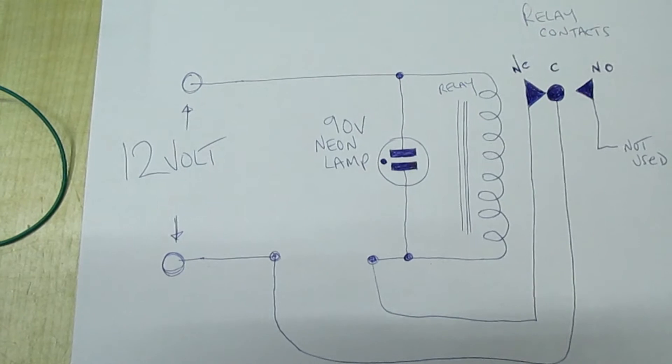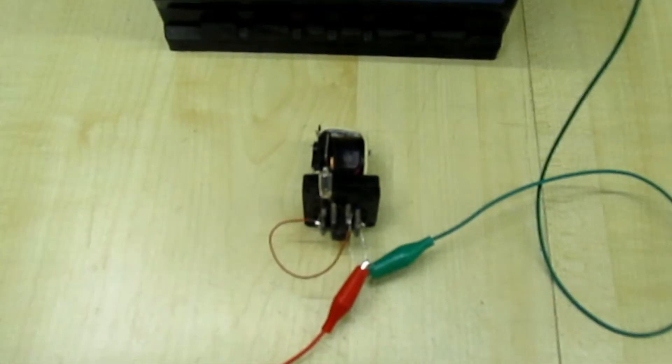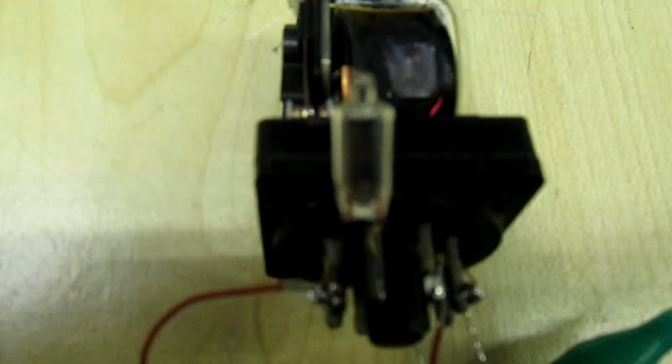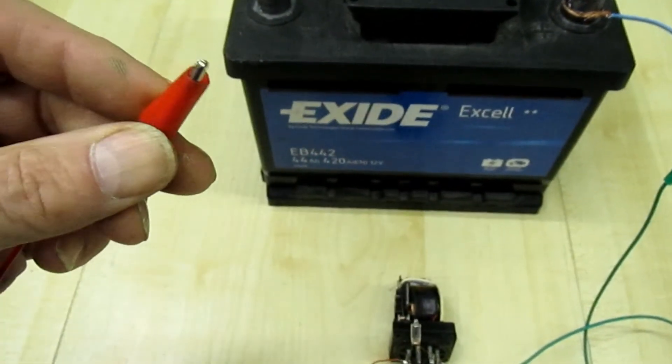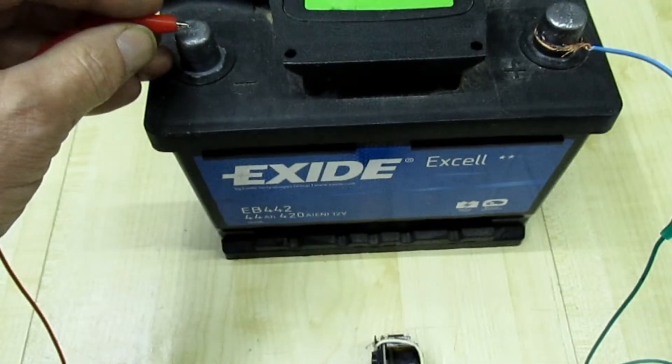I've wired up the circuit exactly like it is in there. That's the relay. You can see the neon bulb connected across the relay's coil. I'm just going to take this and put it on the battery. That's the on and off switch.